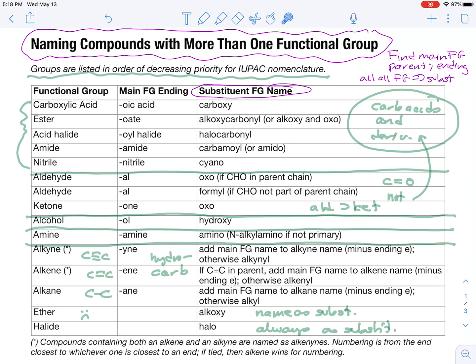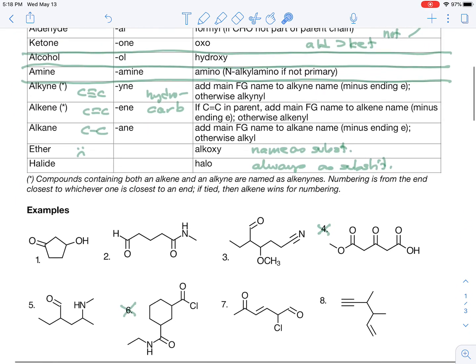And as you already know, for alkynes and alkenes, you add the main functional group name to the alkyne name. So when I do nomenclature, I always talk about the hydrocarbon name, not the alkane name. Okay, so let's tackle a few examples.